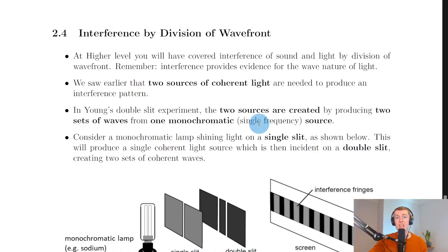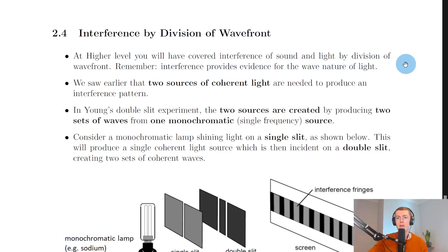We're now onto our second main type of interference at advanced higher level called interference by division of wavefront. This is different to division of amplitude in the way it works. At higher level you will have covered interference of sound and light by division of wavefront. Remember that interference provides evidence for the wave nature of light.